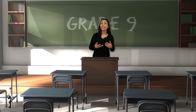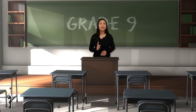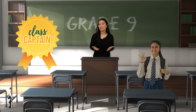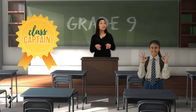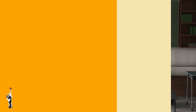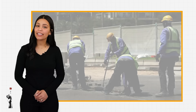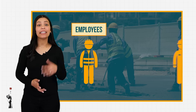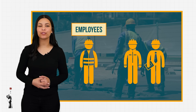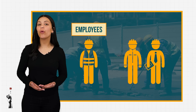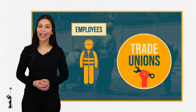Grade nines, usually at the start of the year the class would go ahead and elect a class captain to represent the class. Sometimes the class would like to sneak in an off period and they would send the class captain to go and ask the teacher. In various industries and workplaces, employees need a body or a group of people to represent their employment needs or requests. We call this body or group of people trade unions.